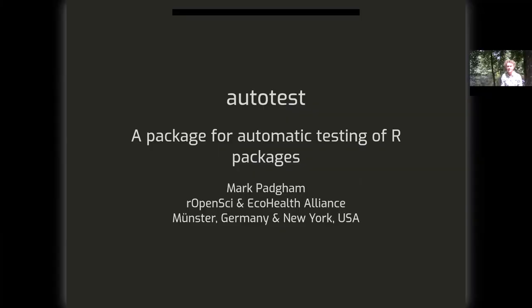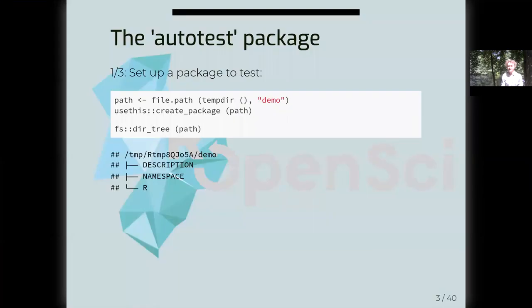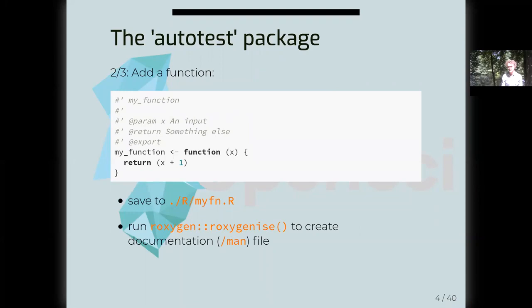That's enough for an introduction. We will now look at how the AutoTest package actually works. The AutoTest package at the moment lives on GitHub at an organization called rOpenSciReviewTools. If you simply search for rOpenSci on AutoTest, you'll find the package — it will hopefully be on CRAN by the time this talk is given. The AutoTest package in three simple steps: first, it needs a package to test, so it can only test R packages. The first two lines here create a simple R package, and the third line displays the directory tree.